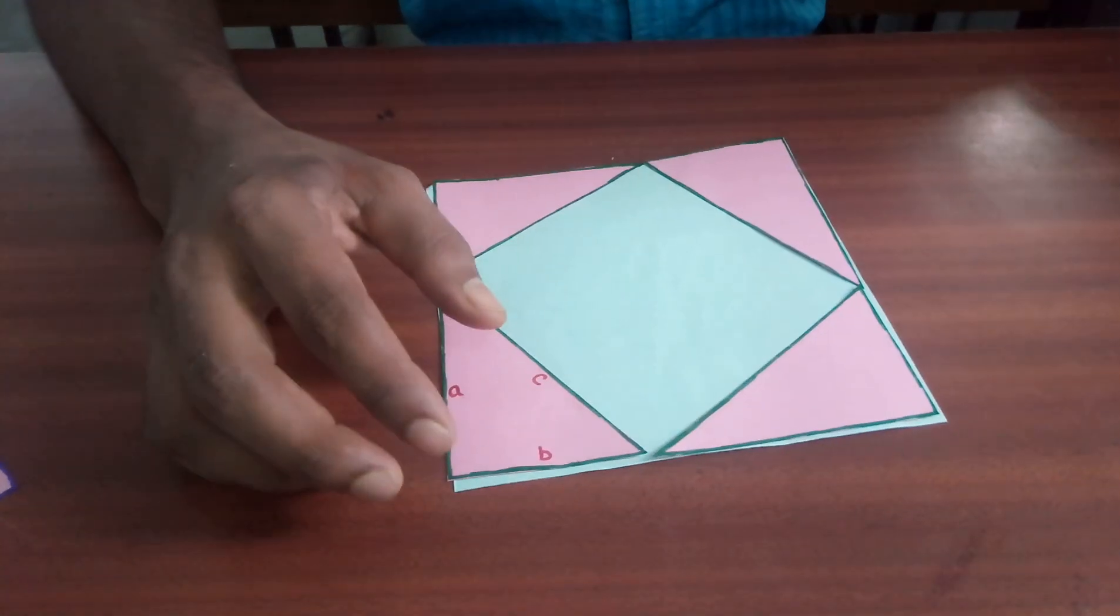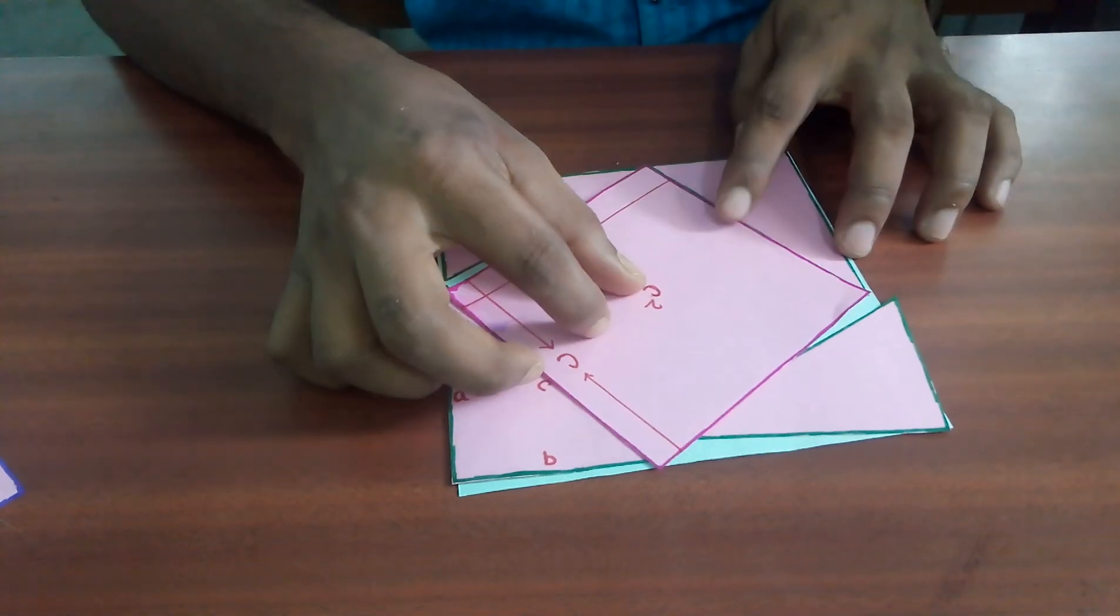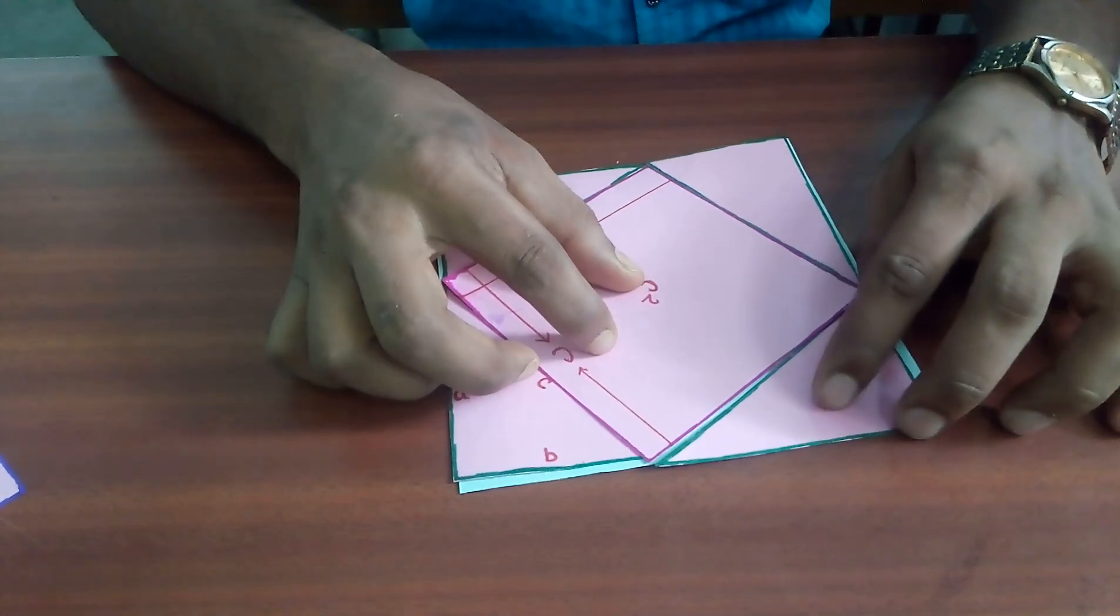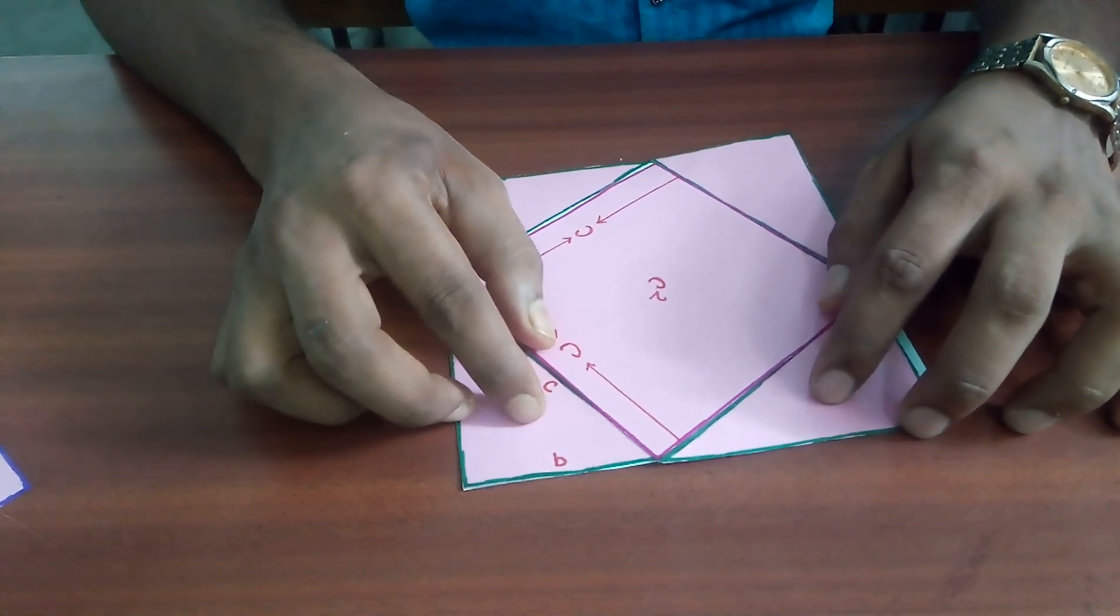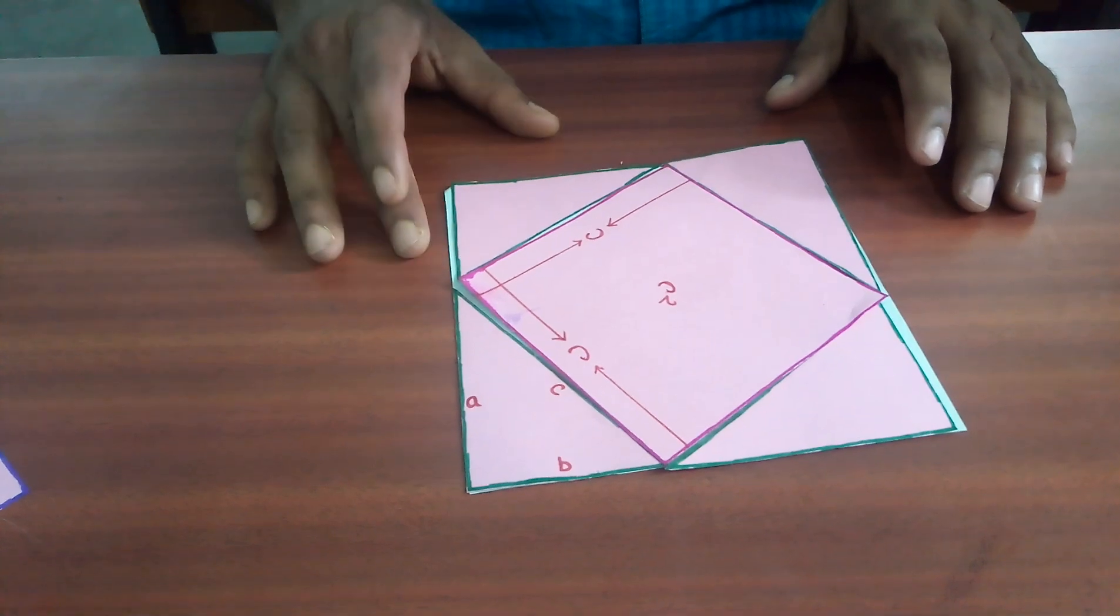And in the middle, we will place the square with side C unit. So, we can see the area is exactly equal to the previous one.